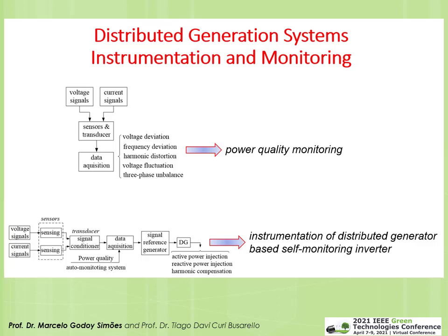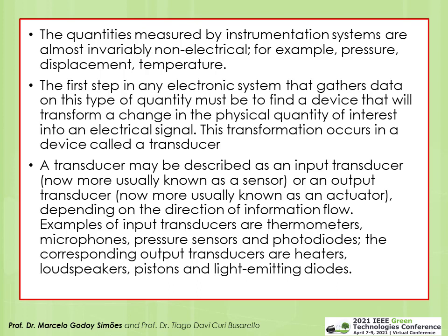Some systems require power quality monitoring: voltage and current signals go into a computer or system that observes voltage deviation, frequency deviation, harmonic distortion, voltage fluctuation, and any imbalance on the three-phase system. The bottom of the figure shows a self-monitoring inverter where, with voltage and current signals, a power quality auto-monitoring system manages active power, reactive power, and harmonic compensation.